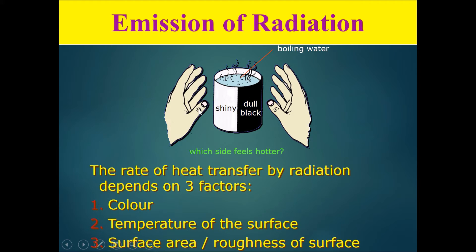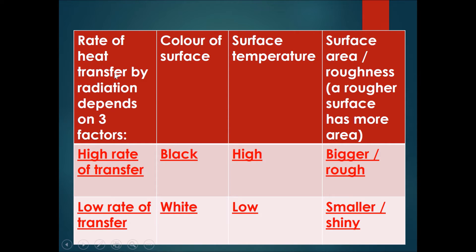This is because a rougher surface is a better emitter of radiation, while a shiny surface is a worse emitter. To summarize, the rate of heat transfer by radiation depends on three factors: the color of the surface, the surface temperature, and the surface area or roughness. A rougher surface has more area. For a high rate of heat transfer — whether absorption or emission — you should use a black surface, a high temperature difference, and a bigger or rougher surface area.